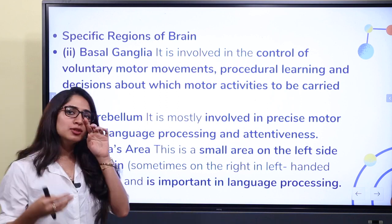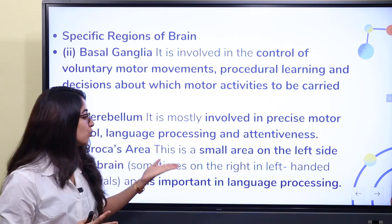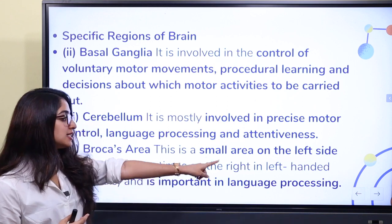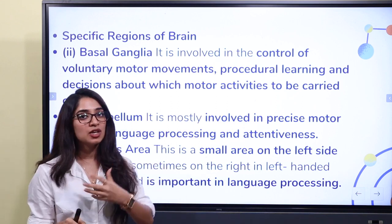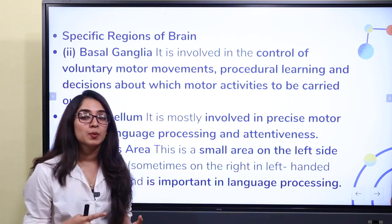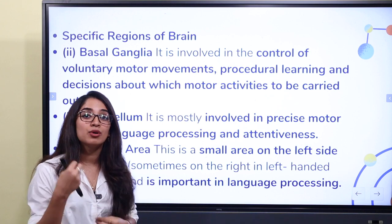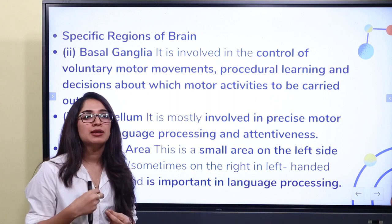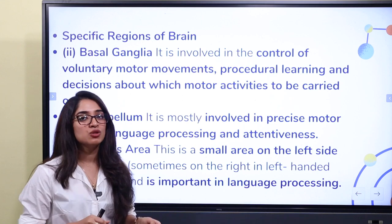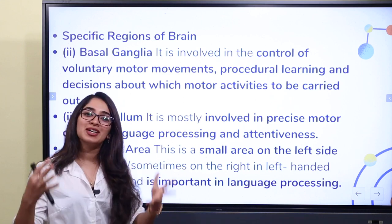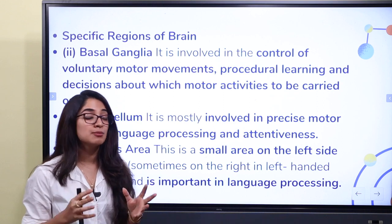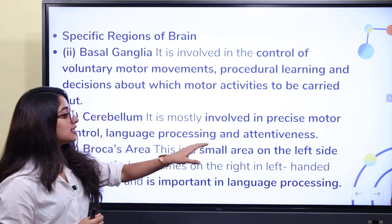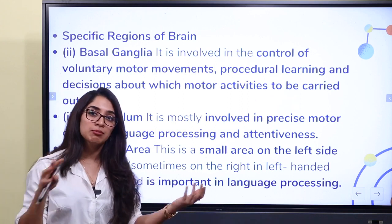Broca's area is a small area on the left side of the brain, though in left-handed people it can be on the right side. It is important for language processing. Any deficit or pressure in Broca's area leads to difficulties in language processing.